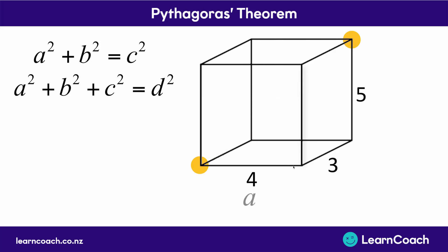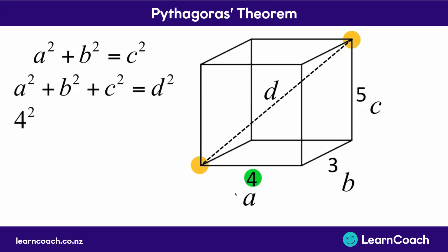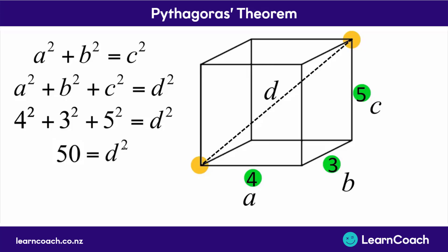So we label our sides a, b, and c for our three shorter sides, and our long diagonal is d. Then we put those numbers into the formula: a is 4, b is 3, and c is 5. We plug this into our calculator to find d squared. We square all our numbers, add them together, and we get an answer for d squared, which in this case is 50.